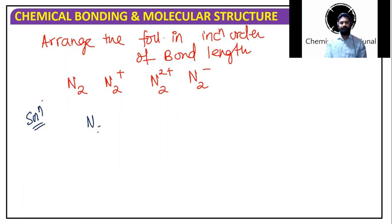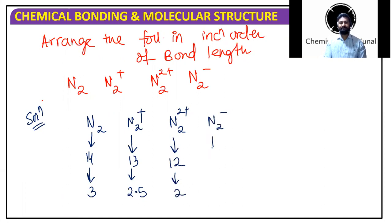So N2 has how many electrons? 14. So bond order is 3. N2+ is how many electrons? One less than 14, which is 13. Bond order 2.5. N2 2+, the bond order will be - number of electrons is 12, bond order 2. N2- number of electrons is 15, bond order 2.5.